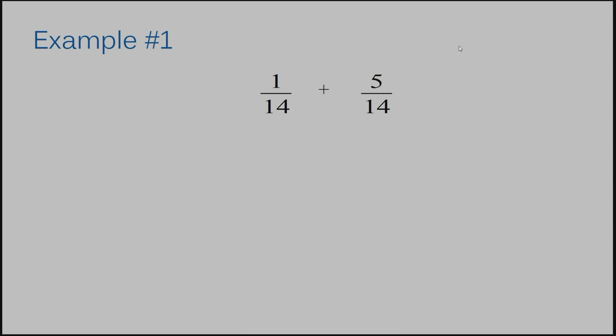Let's look at example number one. We already have common denominators for this example, so adding is going to be pretty easy. When adding fractions, all you do is add the numerators. One plus five is six. Your denominators always stay the same.